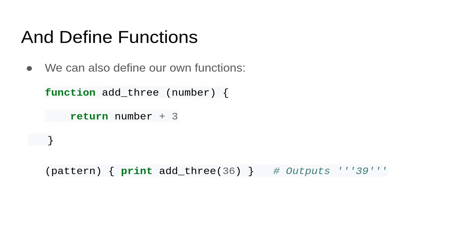We can also define our own functions, which is very useful and helps make Awk much more of a general purpose language. In this case, we're declaring a new function — we'll call it 'add three'. It takes one argument called 'number', adds three to it, and returns the value. Down in our pattern-action block, any time it matches, we invoke our function and add the return value as the first argument to the print function. So for example, if we're passing 36 in, it outputs 39.